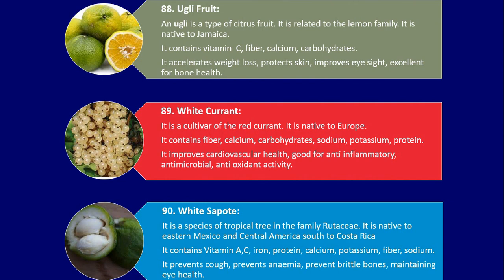Number 88. Ugli Fruit. An ugli fruit is a type of citrus fruit. It is related to the lemon family. It is native to Jamaica. It contains vitamin C, fiber, calcium and carbohydrates. It accelerates weight loss, protects skin, improves eyesight, and is excellent for bone health.